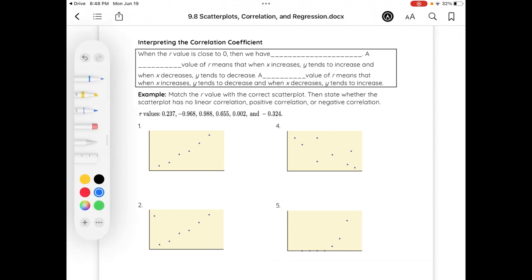Let's interpret the correlation coefficient. So when our r value is close to zero, we have no linear correlation. A positive value of r means that when x increases, y tends to increase, and when x decreases, y tends to decrease. A negative value of r means that when x increases, y tends to decrease, and when x decreases, y tends to increase. So a positive value of r means a positive slope. And a negative r means negative slope.